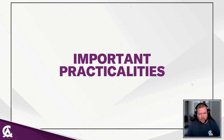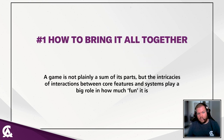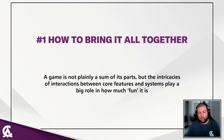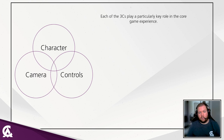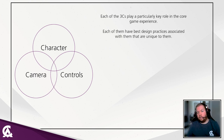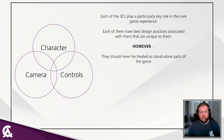Before we end the talk, let's cover some important practicalities. Number one: how to bring it all together. A game is not simply the sum of its parts — the intricacies of interaction between core features and systems play a big role in how fun it is to play. Character, controls, and camera need to be thought about together, not just individually. Each plays a key role in the core experience and has unique best design practices, but they should never be treated as standalone parts of the game.